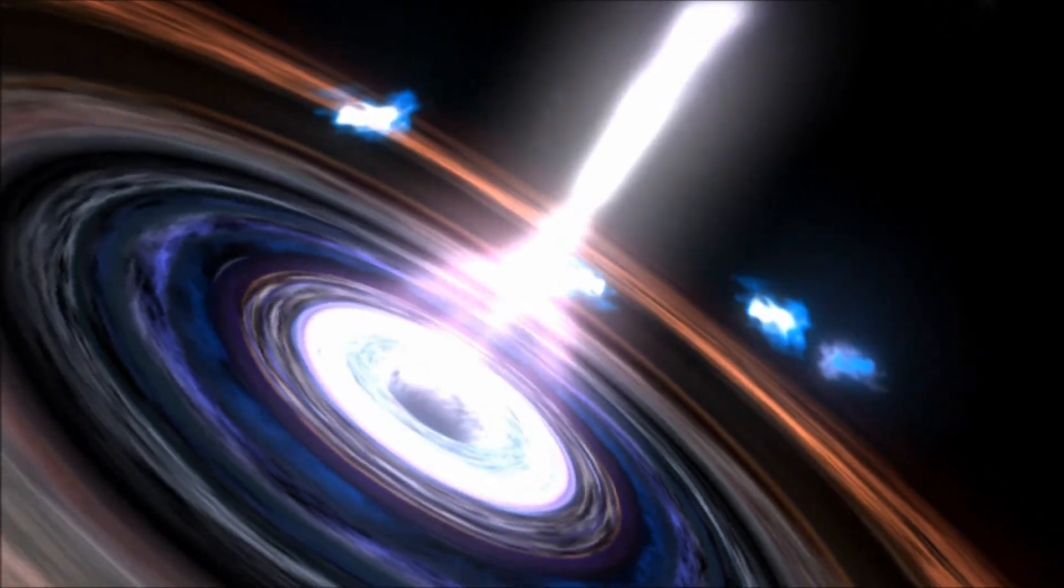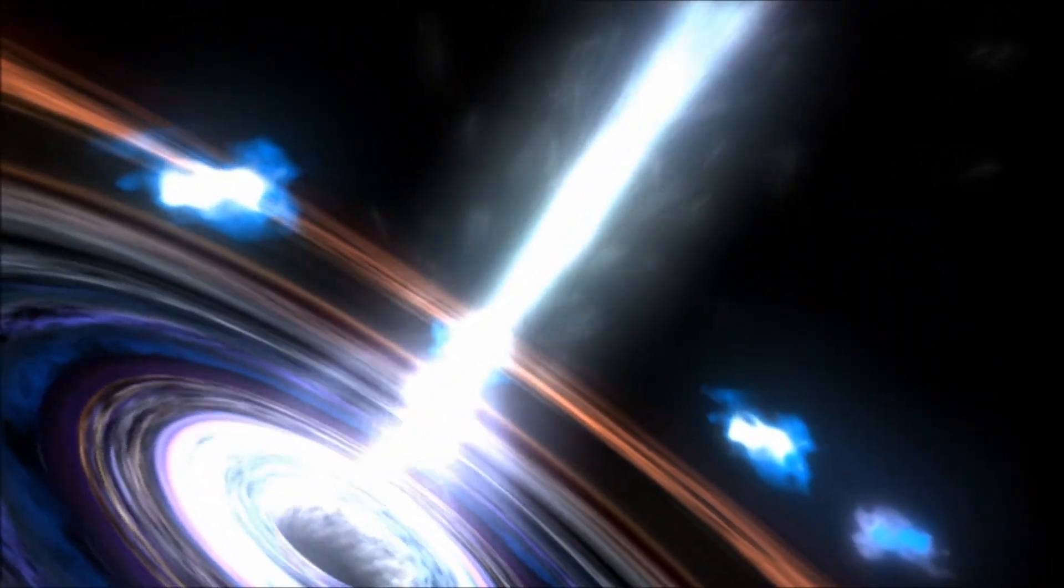Likewise, X-ray telescopes reveal supermassive black holes in the cores of distant galaxies. Matter that spirals inward gets hot enough to glow in X-rays just before it plunges into the black hole and out of sight.